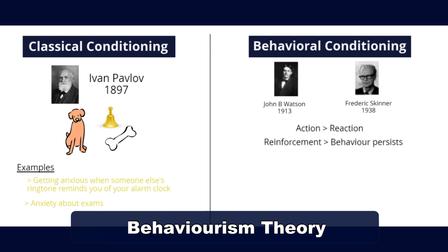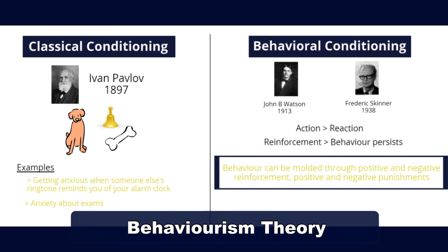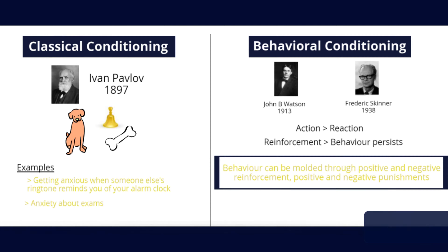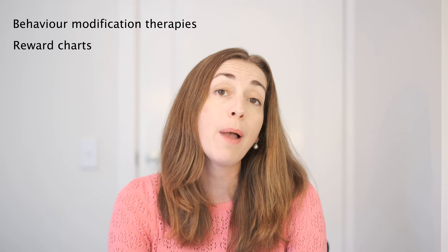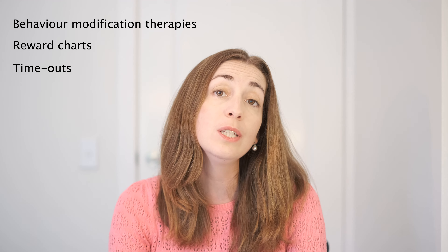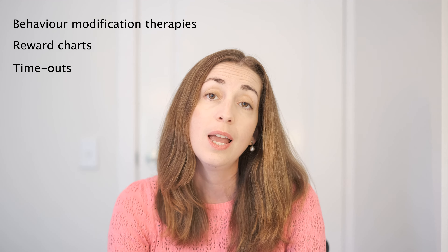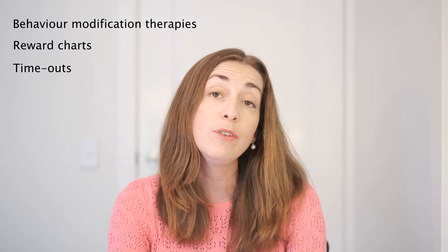John Watson famously claimed that if he were given a dozen healthy infants, he could shape them into anything — doctors, lawyers, artists, beggars or thieves — regardless of their background or genetic predispositions. With this theory, the individual is passive and behavior is molded through positive and negative reinforcements and punishments. This started the whole movement of behavior modification therapies, reward charts, behavior charts, timeouts and other punishments that are so prevalent in parenting books and practices. Our current school system is based on this behaviorism theory.